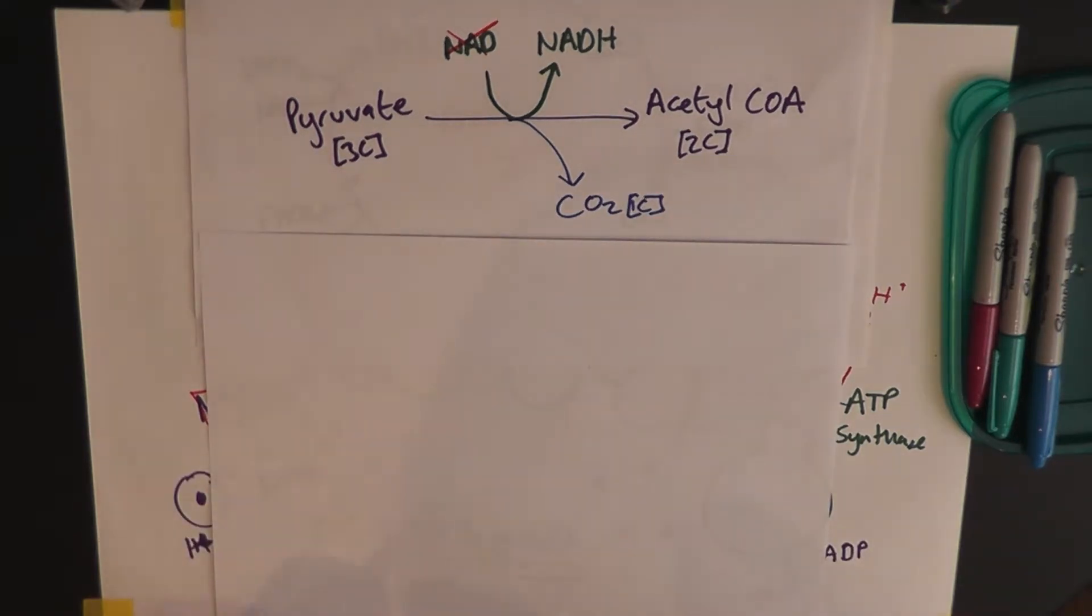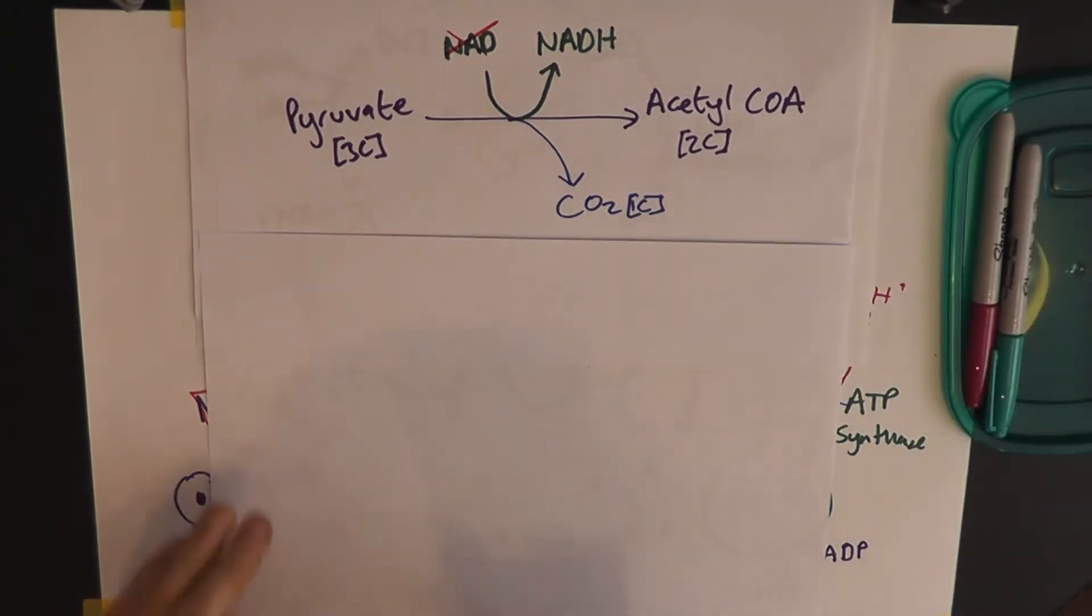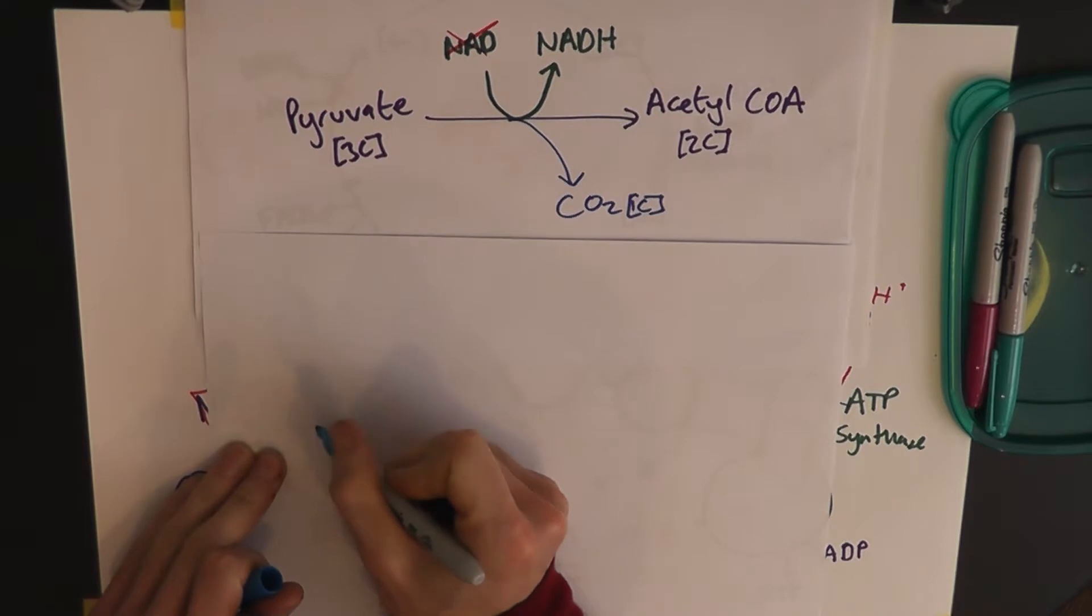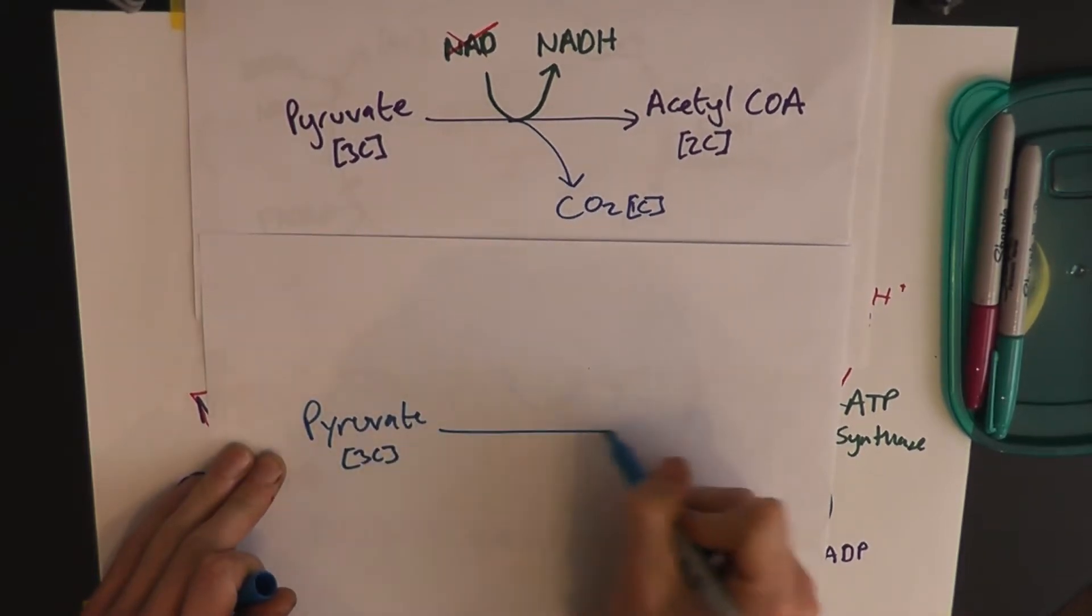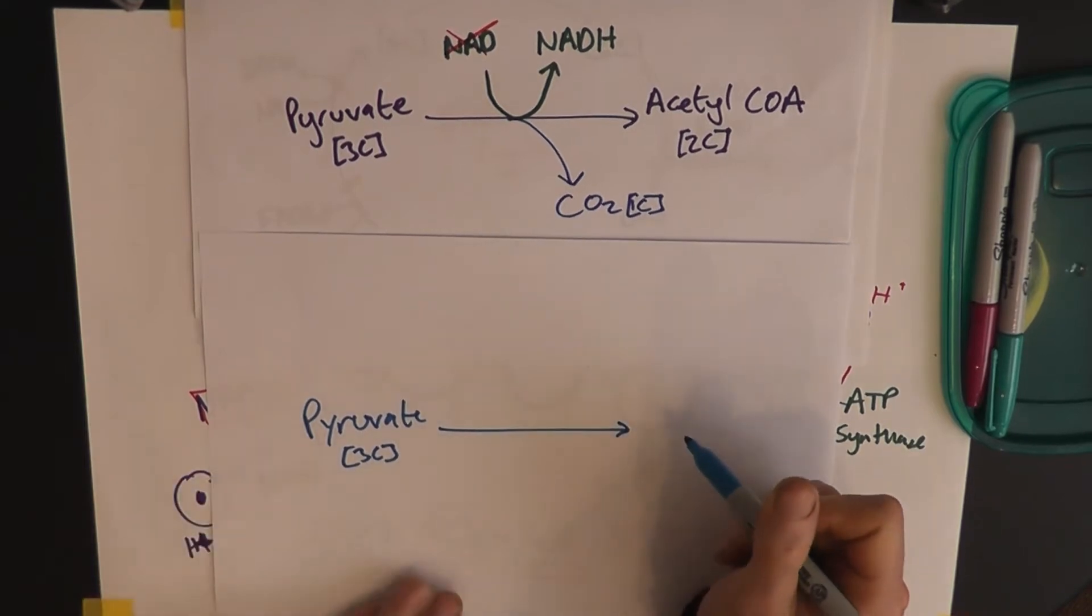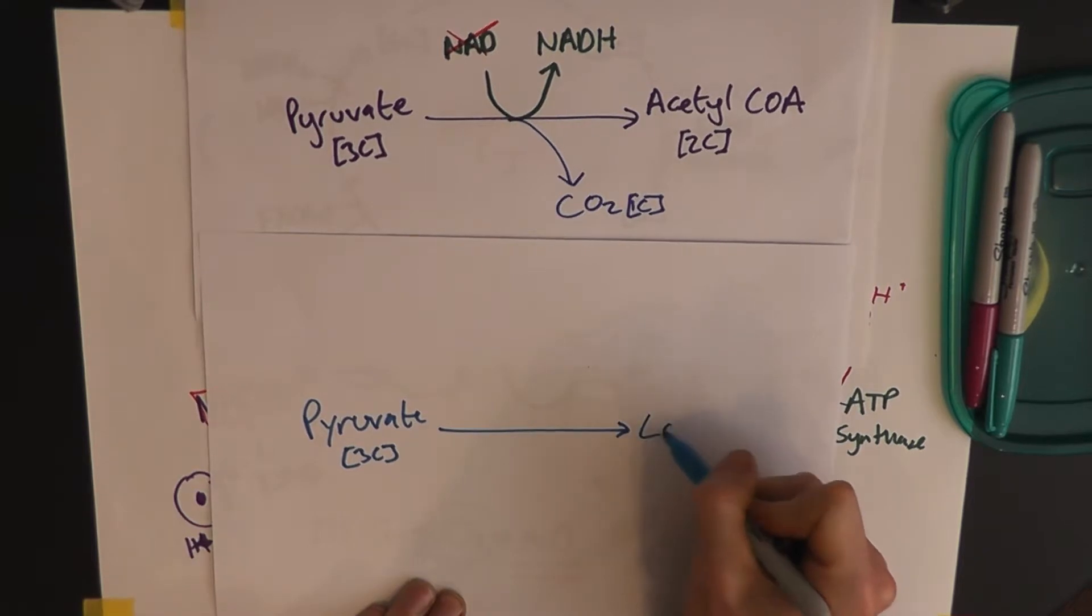This is the anaerobic respiration equation, and it goes something like this. We've got pyruvate, which is a three-carbon molecule, that we get from the Krebs cycle. And we convert that, not into acetyl CoA, which is a two-carbon molecule, but into lactate, or lactic acid, as it's sometimes known.